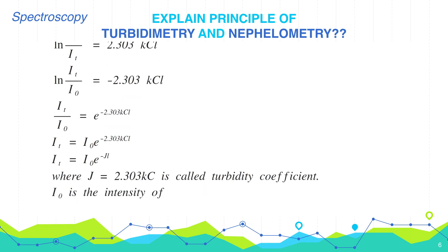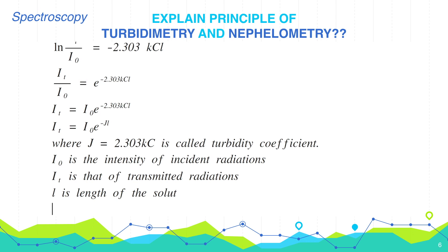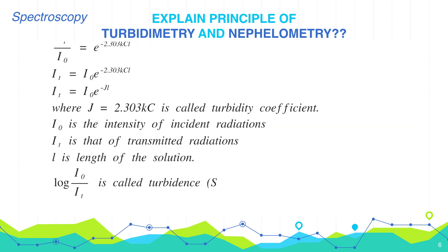i0 is the intensity of incident radiation. it is the intensity of transmitted radiations. l is the length of the solution. And log of i0 by it is called turbidense.